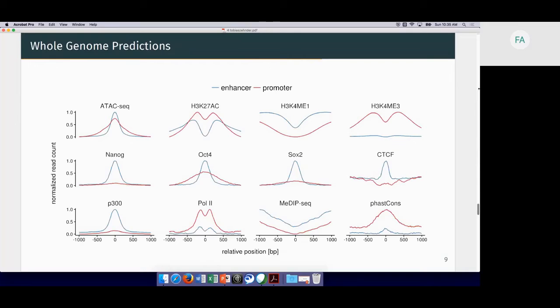When we use the method to do whole genome predictions, we have a very conservative set of about five and a half thousand enhancers in mouse embryonic stem cells. What you can see here is a set of features that we looked at. The first row is basically what we train the model on, so this looks as we would expect: high K4 monomethylation in enhancers, high trimethylation in promoters. But we also see, for example, these three lineage-specific transcription factors peaking mostly in enhancers, which goes along with the idea that enhancers are basically more lineage-specific than promoters.